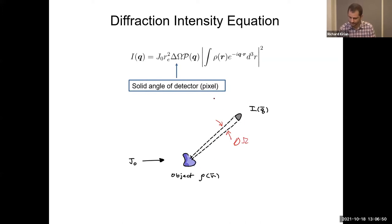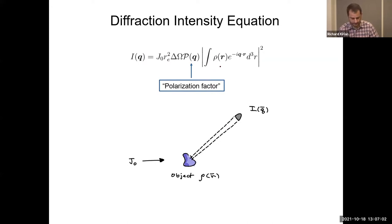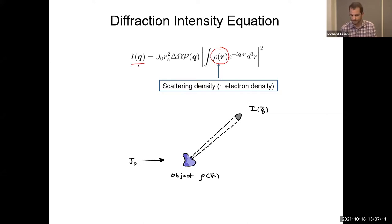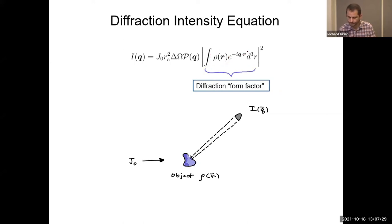P is a polarization factor, because we have vector fields in electromagnetic scattering. ρ is the electron density — we're typically measuring I and want to know ρ. For most phase retrieval topics in this workshop, we ultimately want to get to this ρ. It's enclosed inside an absolute value, and there's a Fourier transform here. This Fourier transform is oftentimes called the diffraction form factor.